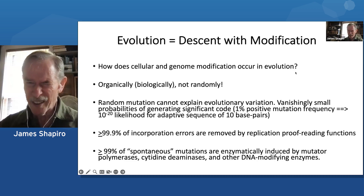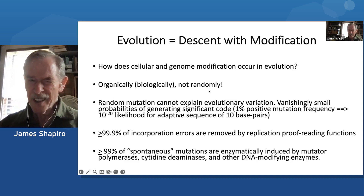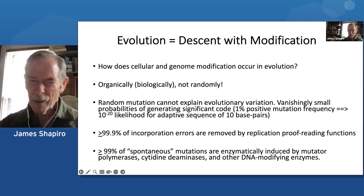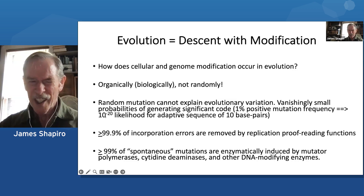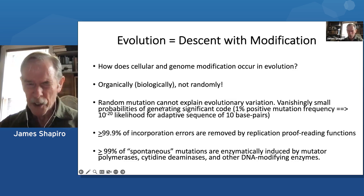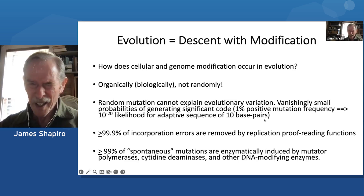How does cellular and genome modification occur in evolution, which is my specialty? The fact is it occurs organically, biologically. It doesn't occur randomly. It's not accidents. It's not physics. It's biology. Random mutation cannot explain evolutionary variation. If we assume an impossibly high mutation rate to a positive variation of 1%, which is orders of magnitude too high, and we're looking at just random mutations in the genome in the DNA — to make a sequence of 10 base pairs, we have a probability of 1 in 10 to the 20. It would take 10 to the 20 generations to make a sequence of 10 base pairs, and one can't build a genome on that basis.